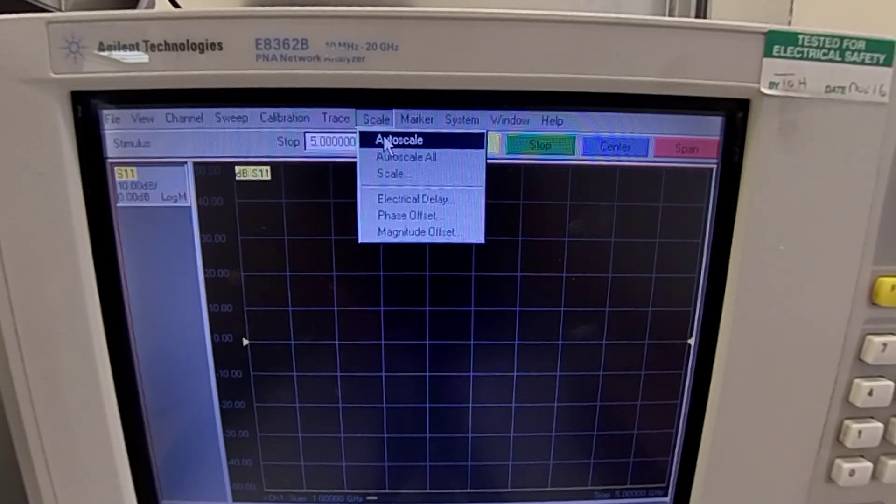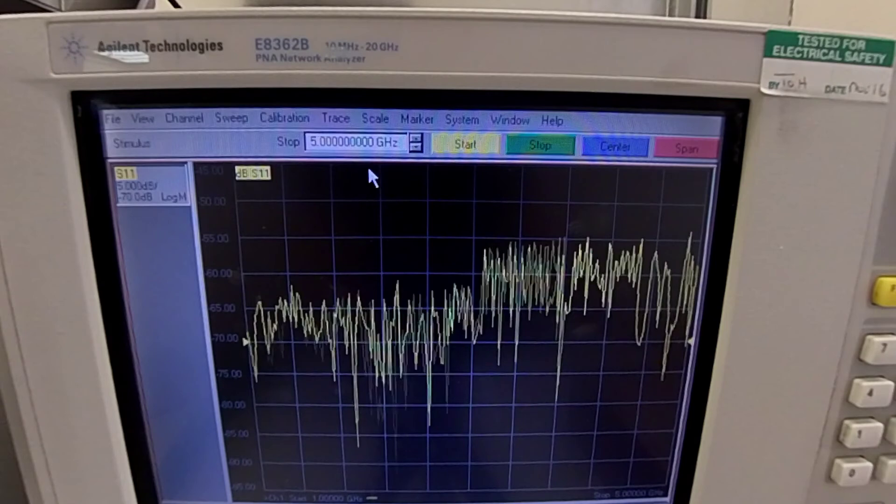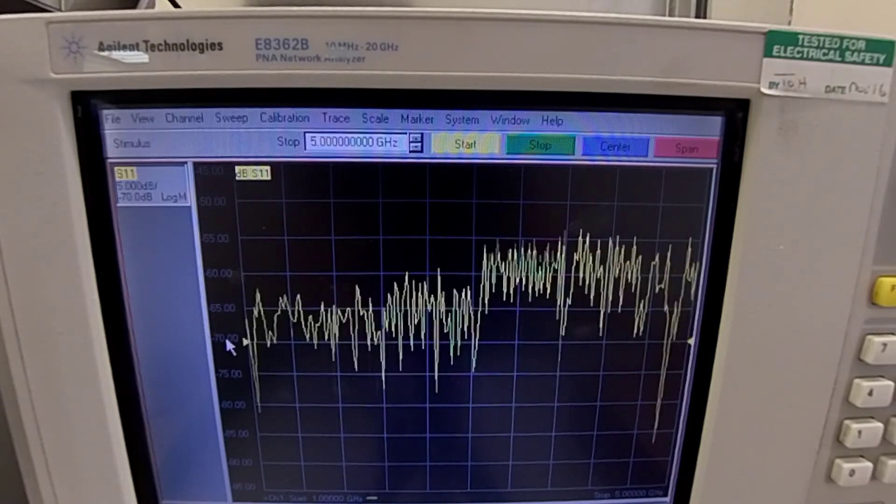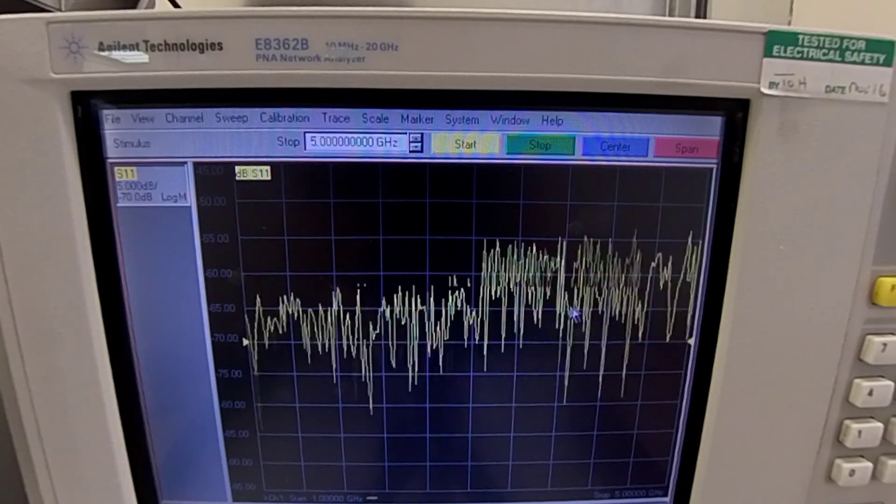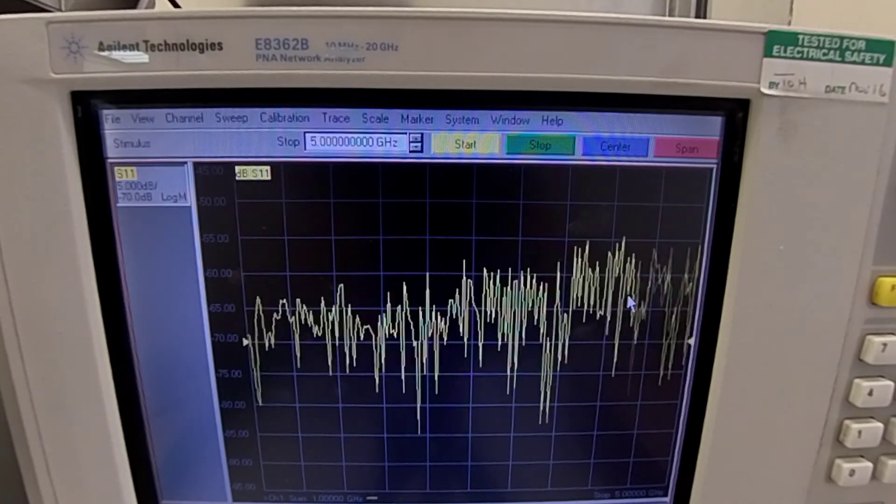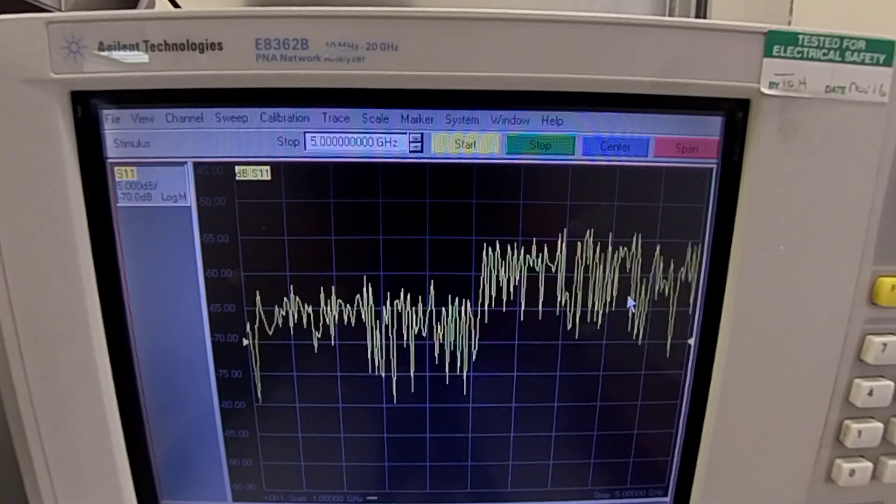You can auto scale to select the desired S11 response of the broadband load. As you can see, it is highly matched and is showing around minus 70 dB matching with the load.